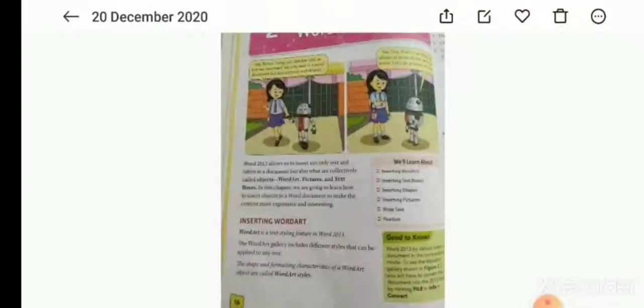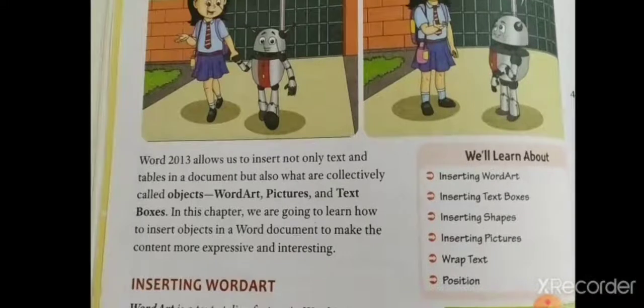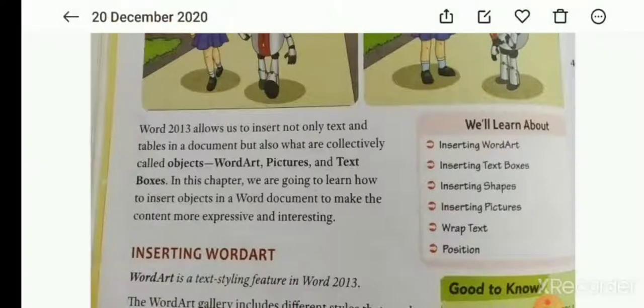Hello students, today we will teach Chapter 2: Objects in Word 2013. Word 2013 allows us to insert not only text and tables in a document, but also what are collectively called objects, which include pictures and text boxes.